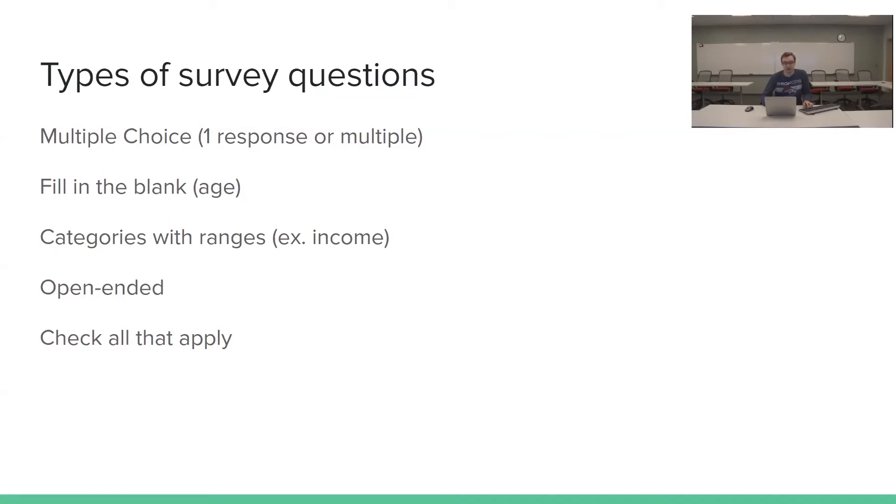Finally, we have check all that apply question. And this is a structured question format in which respondents are presented with a list of terms and asked to select those that apply. And there's two different ways that you can get results from these types of questions. You can add up the total checks to make them fill up certain concepts. Or you can look at what percent of people check each possible answer. So you can either look at the total or each individual response.